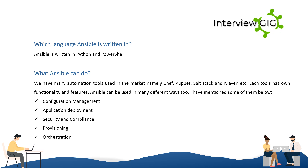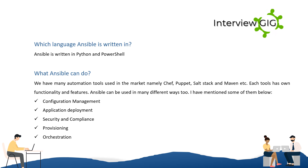What can Ansible do? We have many automation tools used in the market, namely Chef, Puppet, SaltStack, and Maven etc. Each tool has its own functionality and features. Ansible can be used in many different ways too, including: Configuration Management, Application Deployment, Security and Compliance, Provisioning, and Orchestration.